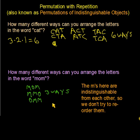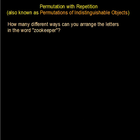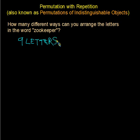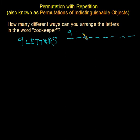Let's figure out how many different ways you can arrange the letters in the word ZOOKEEPER. First, note that there are nine letters in total. If we were looking at just pure permutations, we'd say the total number of ways to arrange those letters is 9 factorial — nine different ways to choose the first letter, then the second, third, fourth, fifth, sixth, seventh, eighth, and ninth: 9 × 8 × 7 × 6 × 5 × 4 × 3 × 2 × 1.